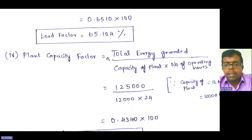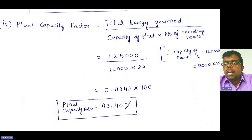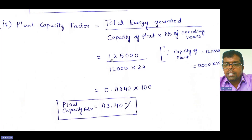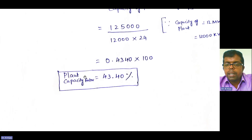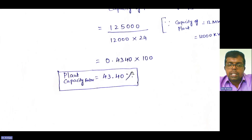For plant capacity factor: plant capacity factor equals total energy generated divided by capacity of the plant multiplied by number of operating hours. Capacity is 12 megawatt, which is 12,000 kilowatts. So 1,25,000 divided by 12,000 into 24 gives 0.4340. Multiplying by 100, the plant capacity factor is 43.40 percent.